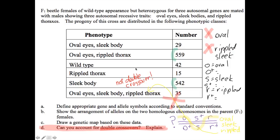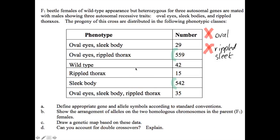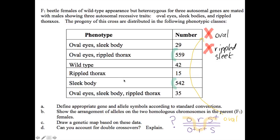The double crossover is not represented with S in the middle, so let's try another order. This time let's put the rippled thorax in the middle. Notice we still have the same genotype but a different order — we've got oval and rippled as one of our large categories, and the other is just sleek body. By organizing these for a double crossover event, what we have is an oval phenotype, and that's not in the table. That tells us that this is the gene order we should use.